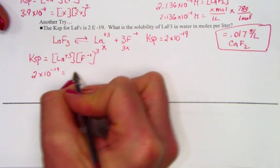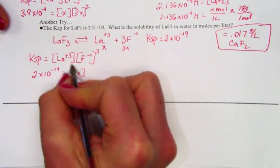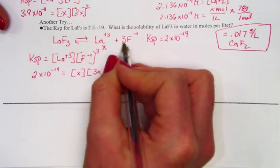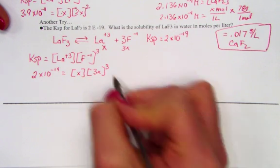2 times 10 to the negative 19th is equal to x. That's a lanthanum value. 3x, that's the concentration of fluoride, and it needs to be cubed.